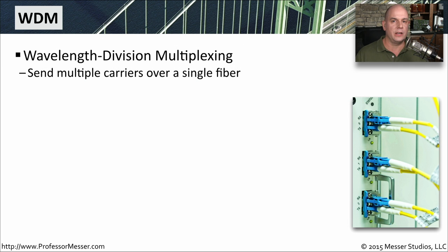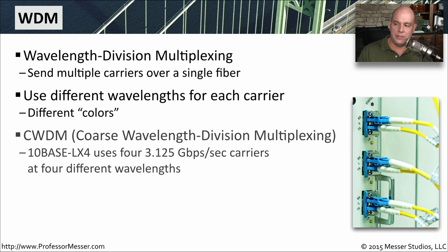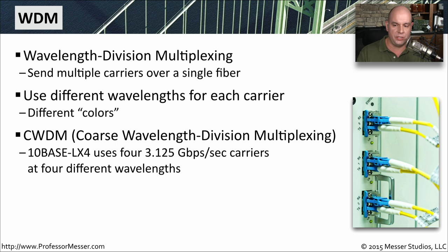Another way of multiplexing traffic across a carrier network is by using WDM, which stands for Wavelength Division Multiplexing, where we're sending multiple carriers over a single fiber, separating those carriers by different wavelengths. In an optical world, those different wavelengths are effectively a different color. CWDM stands for Coarse Wavelength Division Multiplexing, also a standard called 10Base LX4. It uses four separate carriers, and each carrier is 3.125 gigabits per second in bandwidth, giving four different wavelengths going over the coarse wavelength division multiplexing.